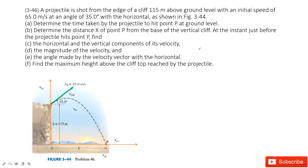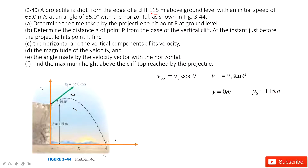If you can solve this problem independently yourself, you can see you truly understand what happens in projectile motion. We first need to construct the reference point, x-component and y-component. The initial position for this particle is 115 meters above the ground. Taking the ground as the reference point, the initial position is 115 meters, and the initial velocity is 65 meters per second at an angle theta.